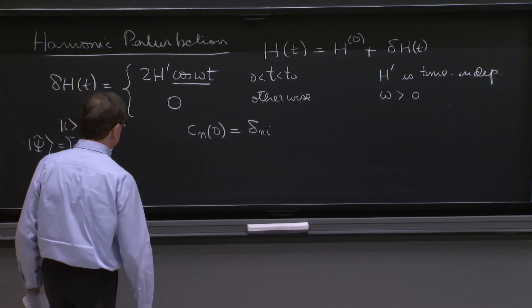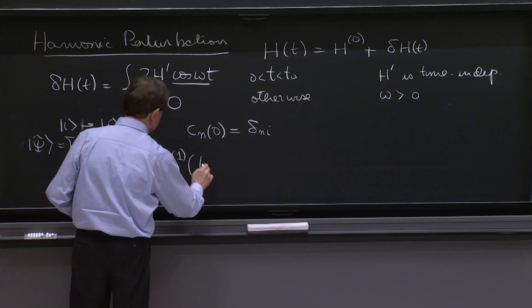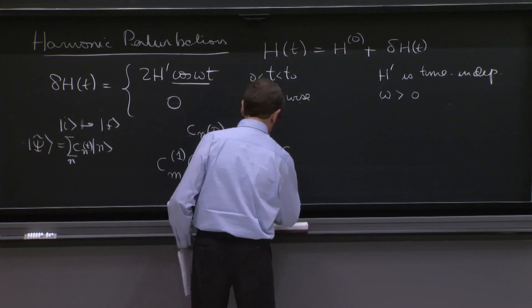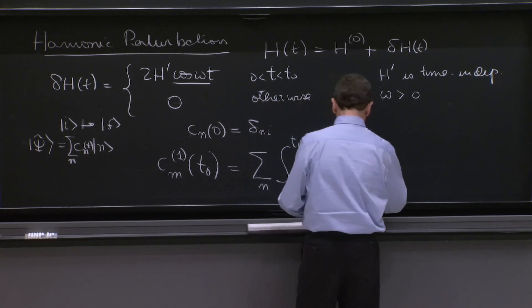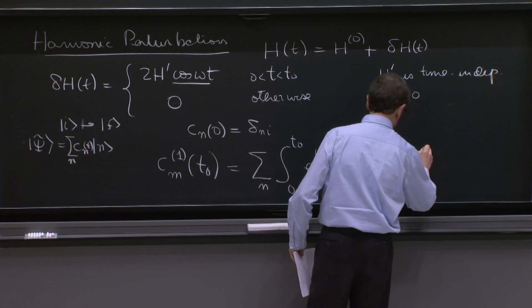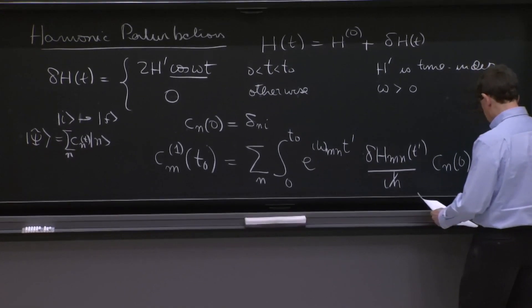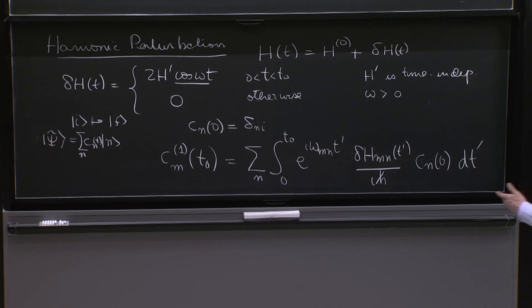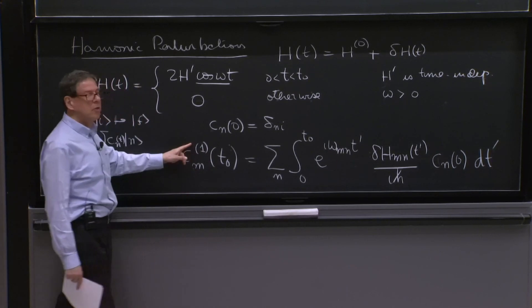We had a general formula for the transition coefficient. And cn of 1 at time equal t, or I'll put t0, is equal to sum over n integral from 0 to t0 e to the i omega mn t prime delta h mn of t prime over i h bar cn at time equals 0 dt prime. This was our general formula for transition coefficients. The cm's is the coefficient, or the amplitude, for the state to be found in the m eigenstate at time t0 to first order in perturbation theory.